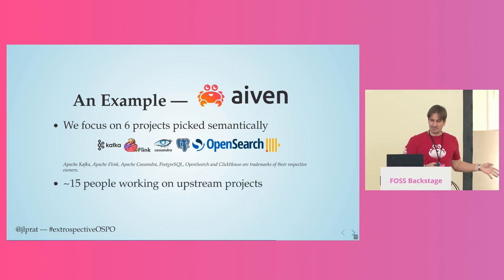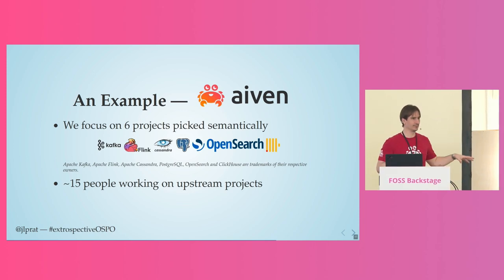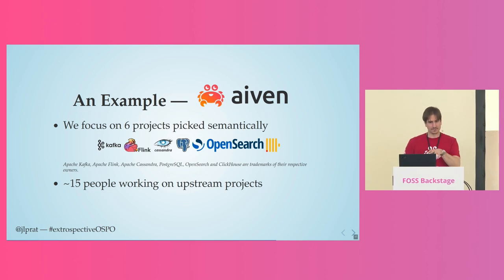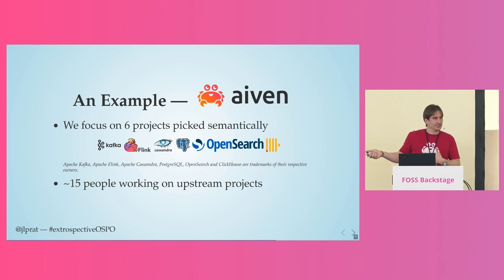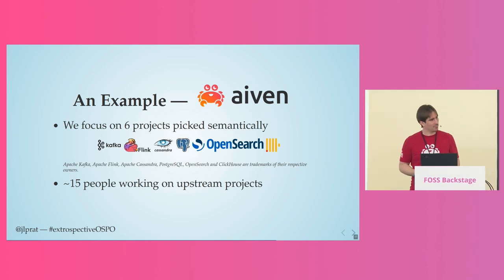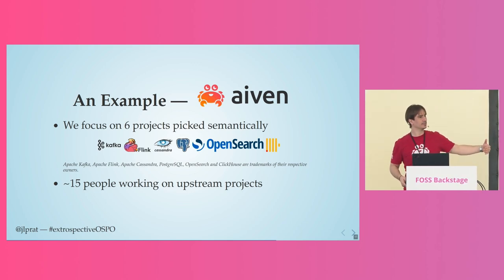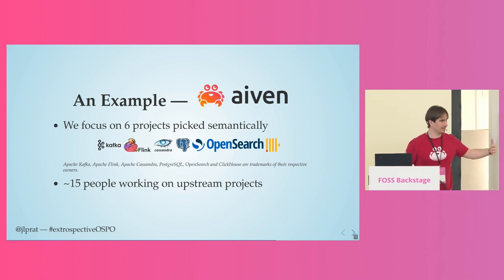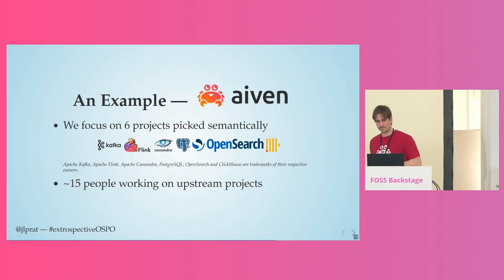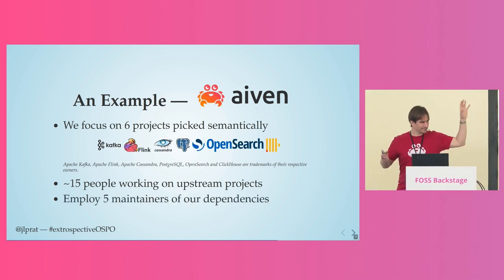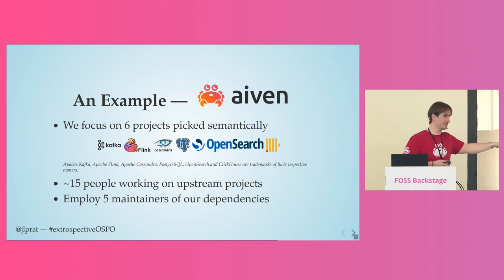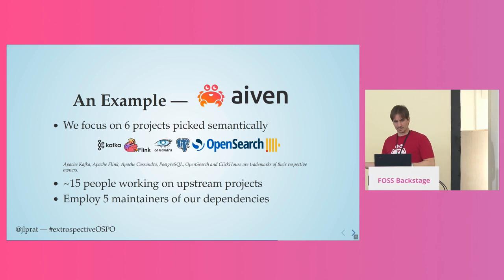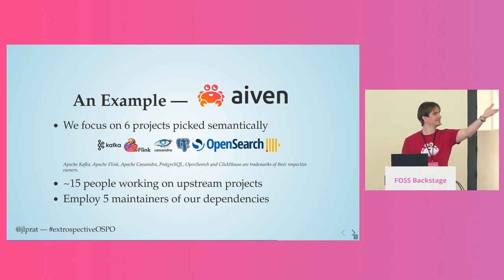We have around 15 people working on upstream projects, and around five more working on projects owned by Aiven. For a company of around 500 people, 15 people working on upstream projects gives you a sense of the proportion. You don't need to pick the same ratio. We wanted at least one person per project, hopefully two, and if a project is really important, three. We started the whole OSPO team with zero maintainers, and we've grown to five maintainers of those dependencies — though many who joined already were maintainers of several projects beforehand.